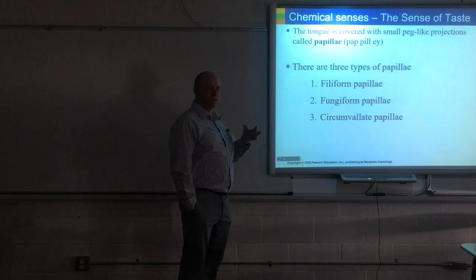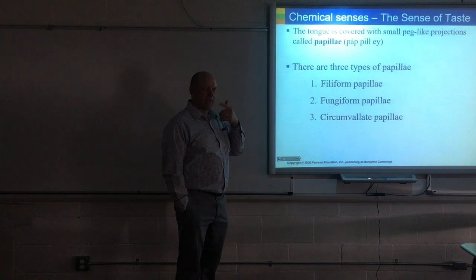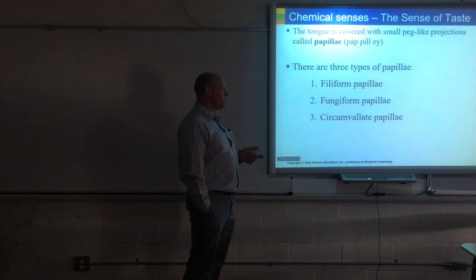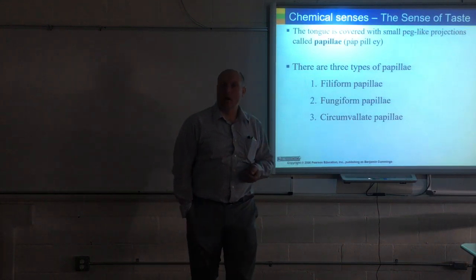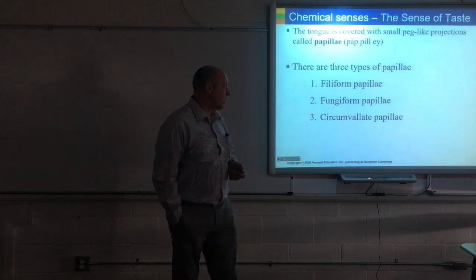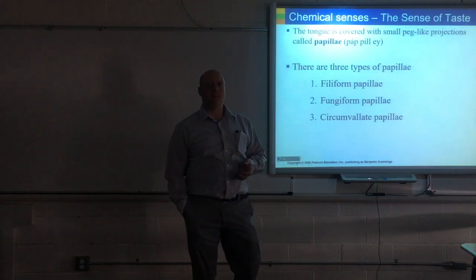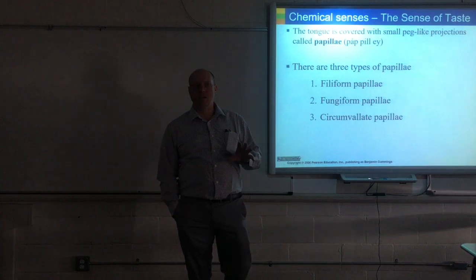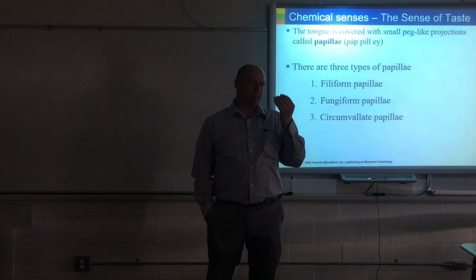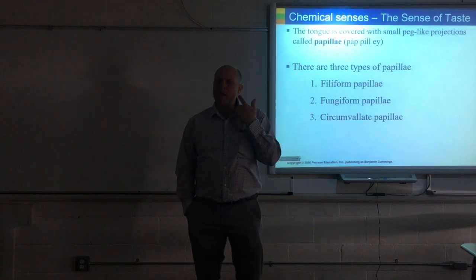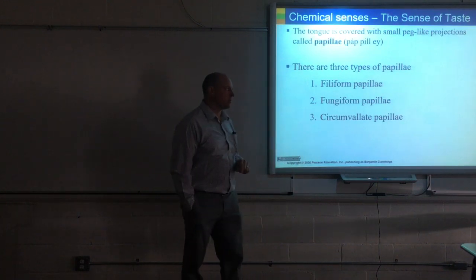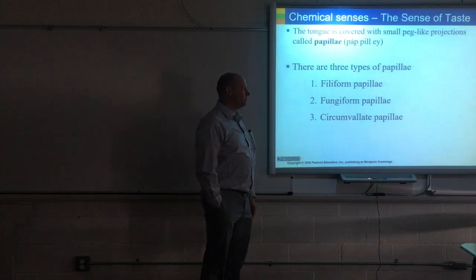There's three types. You have the filiform. These are the ones that are the smallest. I'm going to show you some pictures and some more information on them. They're the smallest, the ones that cover your tongue, make it look like it's almost like it's carpet. You then have your fungiform papillae. Fungiform papillae are the ones that contain most of your taste buds on them. And then you have your circumvallate papillae. These guys here are the ones that you can't really see. They're at the base of your tongue at the very back. You might have a few along the sides of your tongue, towards the lateral sides. And they all three serve a little bit different function.